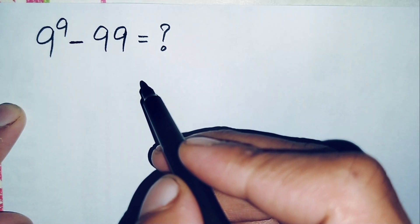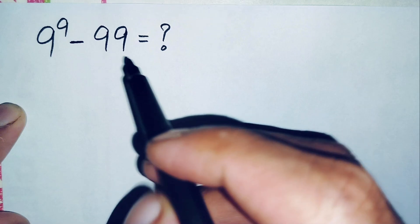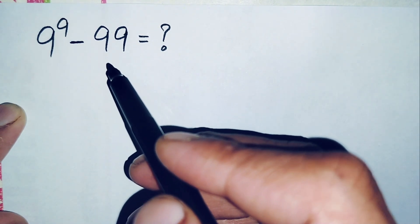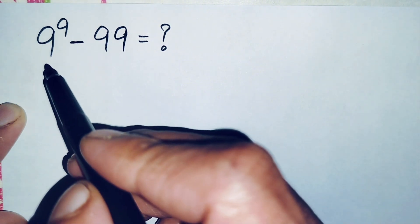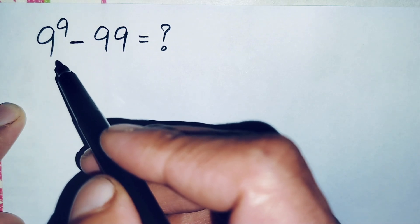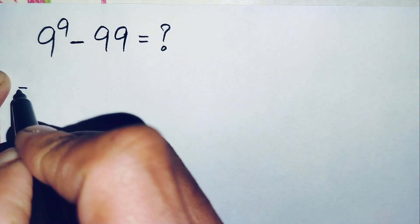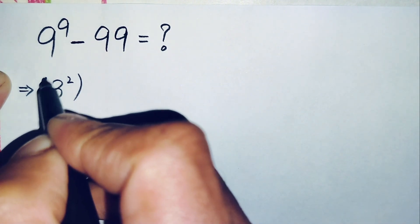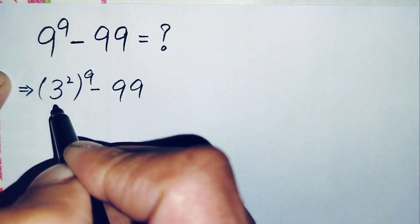Hello everyone, welcome back to Math Explorer. In this video I'm going to solve and find the value of this amazing math problem, which is 3 raised to the power 9, minus 99. First of all, we will try to find the value of the term 3 raised to power 9. We will change this 9 to its exponential form, so we can write 9 as 3 squared.